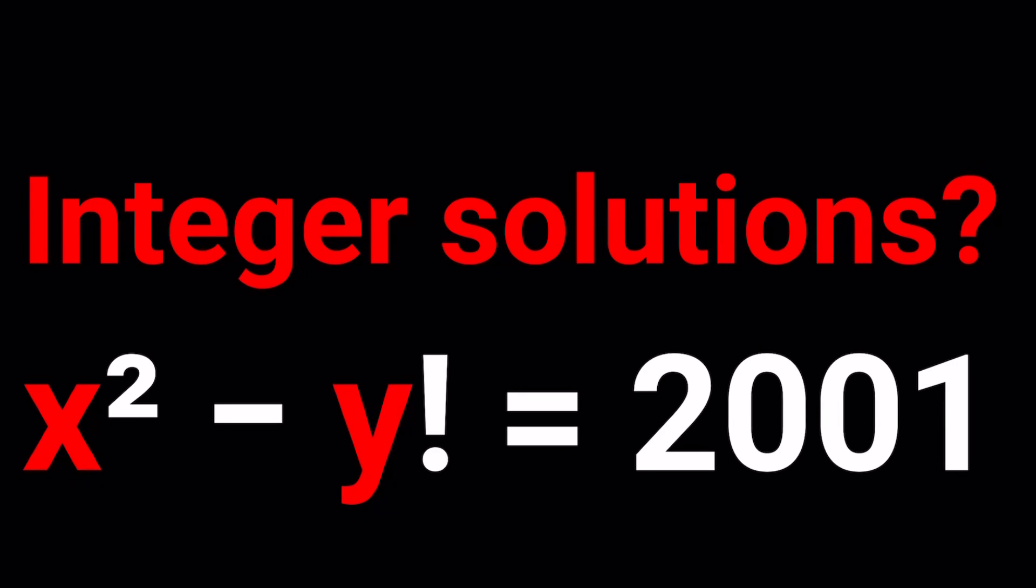Hello everyone. In this video, we're going to be solving an interesting equation for integer solutions. We have x² - y! = 2001, and x and y are integers. Obviously, since we're talking about y factorial, y cannot be a negative integer.